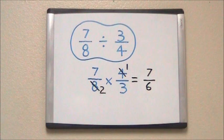Now we multiply across starting with our numerators. 7 times 1 gives us 7. Then our denominators, 2 times 3 gives us 6, for an answer that's an improper fraction of 7 sixths.